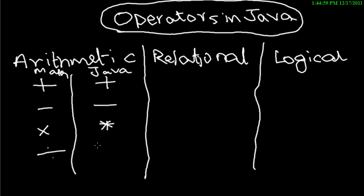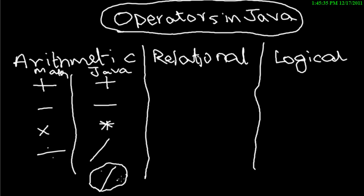For division in math you use the division symbol, but in Java it's a forward slash — the same slash on your keyboard by the question mark key. The last arithmetic operator is modulus, written as a percentage symbol in Java. It finds the remainder of two numbers. I'll make a special video explaining the modulus operator, so don't worry about that now.